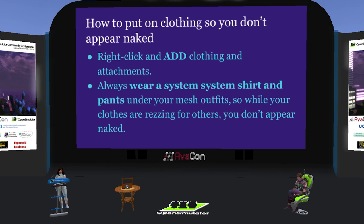Wearing safely — classic clothing and attachments. How to put on clothing so you don't appear naked. Have you ever teleported somewhere and it appears that most of the people there are not wearing clothes? It's kind of disconcerting. Often they're not wearing parts of their bodies either. Even though it's an avatar, you probably don't want to look naked inadvertently. To avoid that, follow these two rules: right-click and add clothing and attachments; and always wear a system shirt and pants under your mesh outfits, so while your clothes are rezzing for others, you don't appear naked.